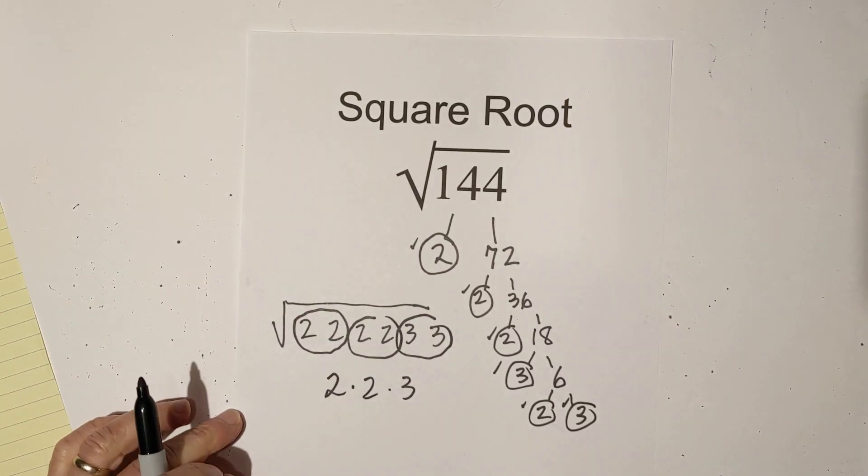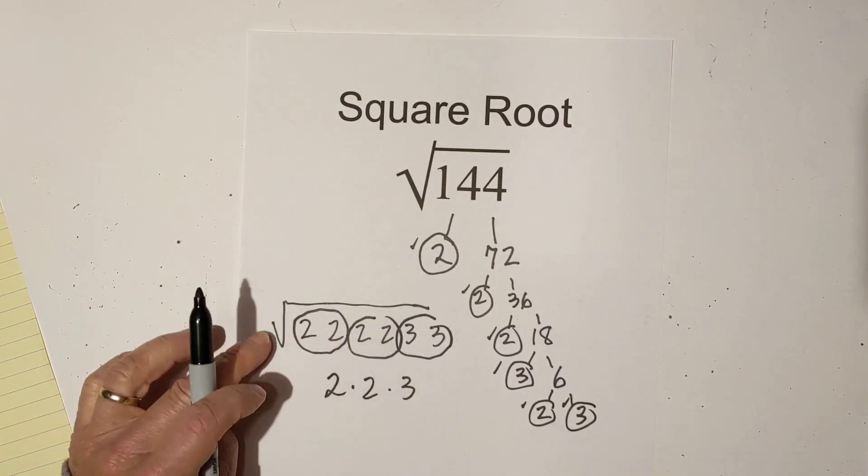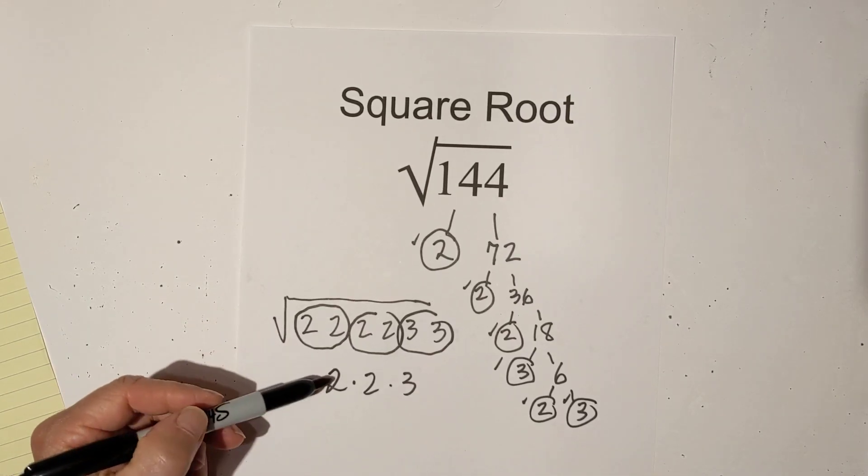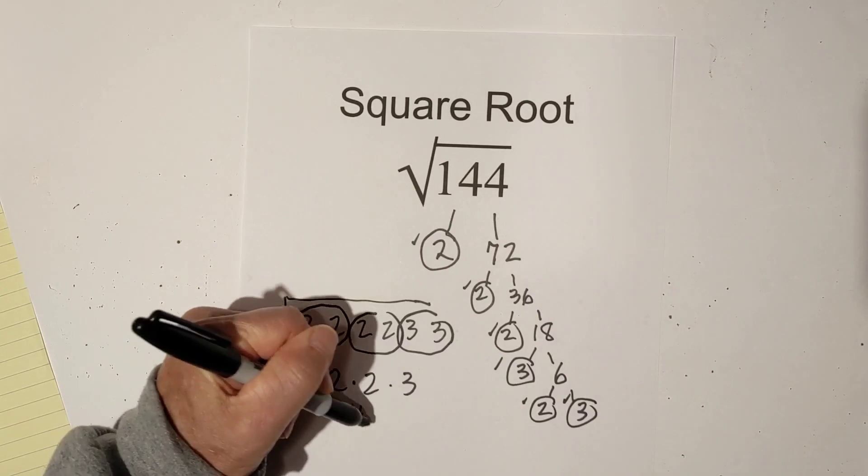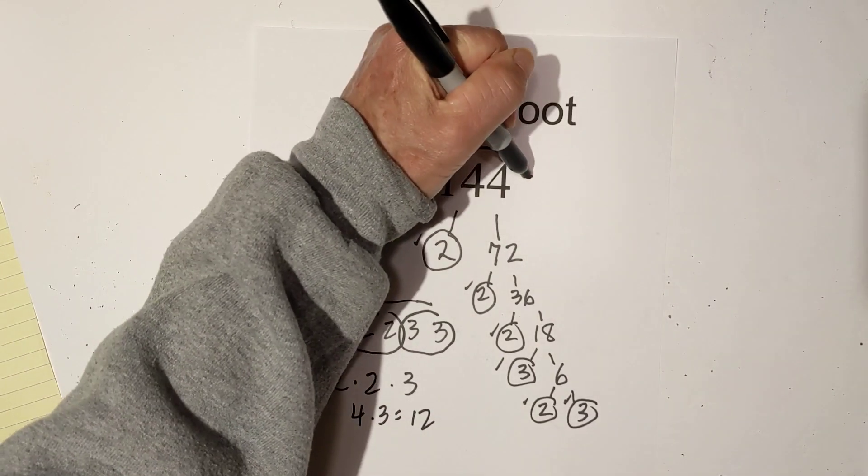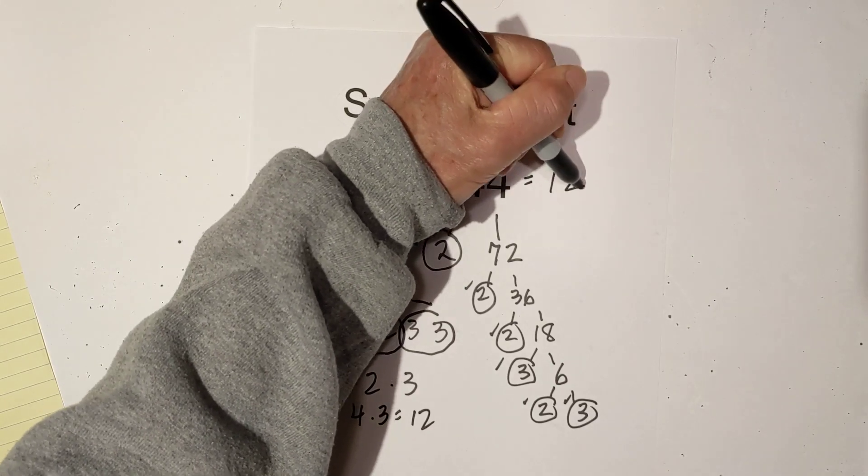And so, like I said, it is a perfect square. So all the numbers come out from under. And now you just multiply these together to get your square root. So now 2 times 2 is 4. 4 times 3 is 12. So the square root of 144 is 12.